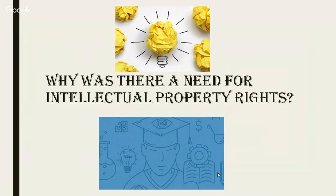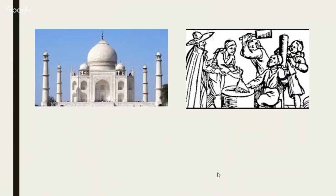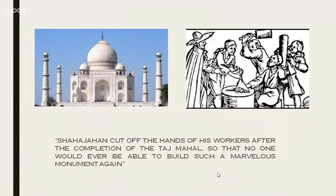Why was there a need for intellectual property rights? Consider the creation of King Shahajan — the Taj Mahal, the famous seventh wonder of the world. At that time there was no intellectual property protection. He collected artisans from around the world and made them build that marvelous monument. To protect it, he cut out the hands of all the great artisans so they couldn't build another. That was how King Shahajan tried to protect his intellectual property.